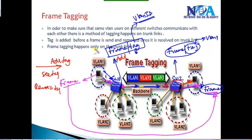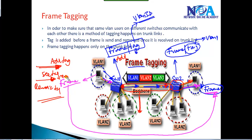Frame tagging ensures that even though multiple VLAN traffic is going on the same trunk link, each frame is differentiated and identified on the remote switch. This keeps VLAN traffic separated within their own broadcast domains. Frame tagging only happens on trunk links — when sending, the tag is added; when receiving, the tag is removed after reading the VLAN information. Frame tagging is mandatory and is a default process on trunk links.